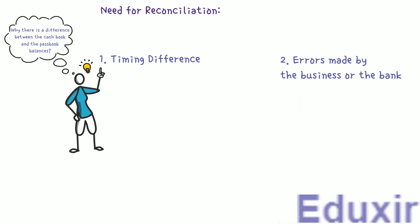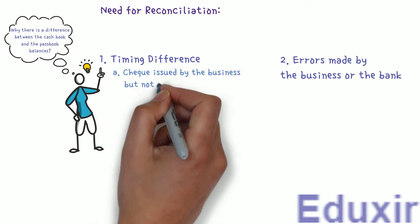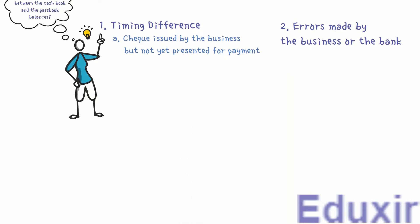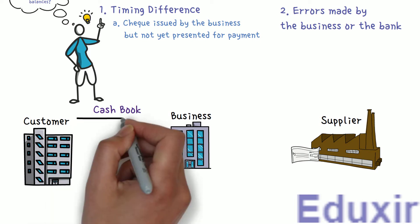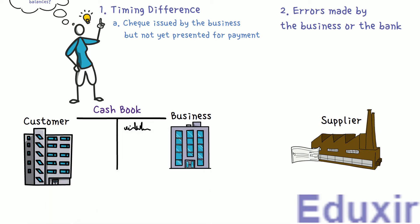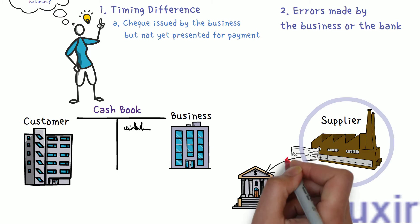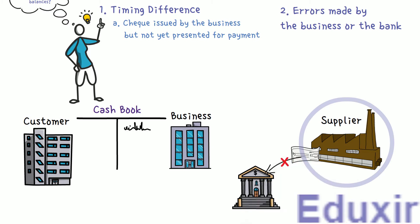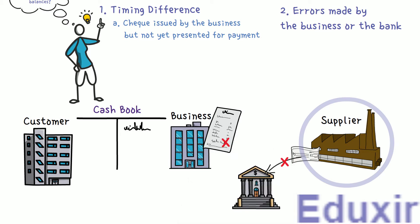One reason for timing difference is checks issued by the business but not yet presented for payment. When the business issues a check to the supplier or creditors, it is immediately entered on the credit side of the cashbook. The supplier or creditor has to encash this check by presenting it at the bank. In some cases, the creditor may not present the check immediately, so it will not appear in the bank statement.